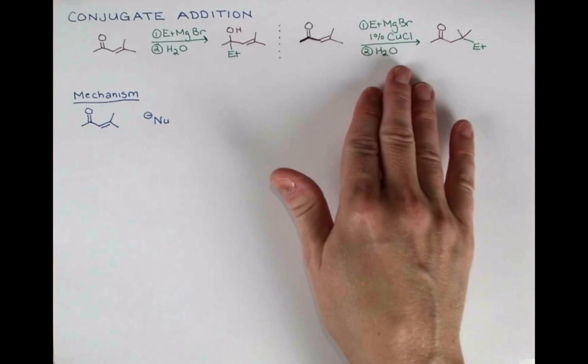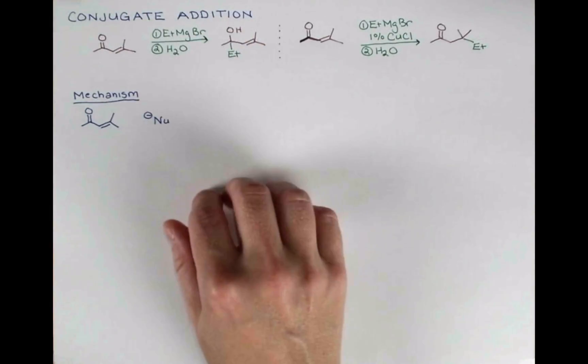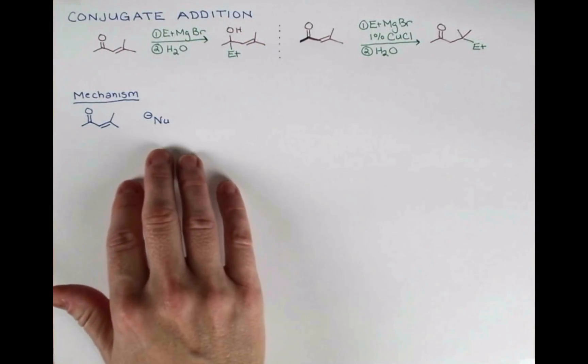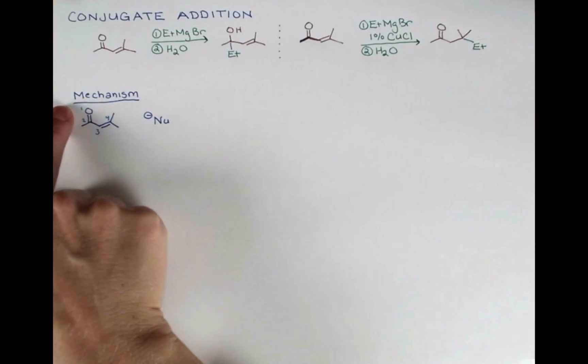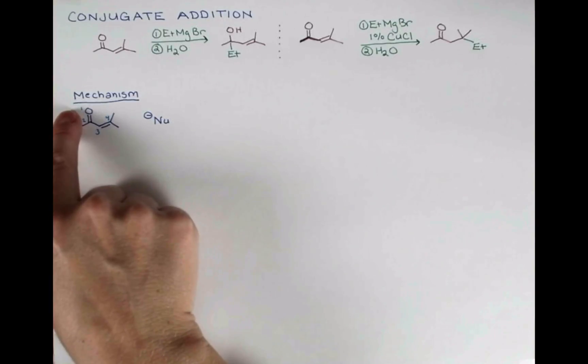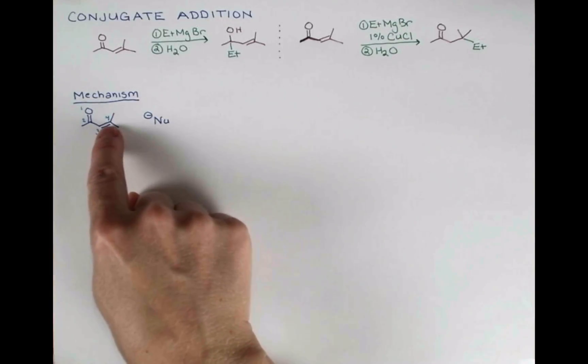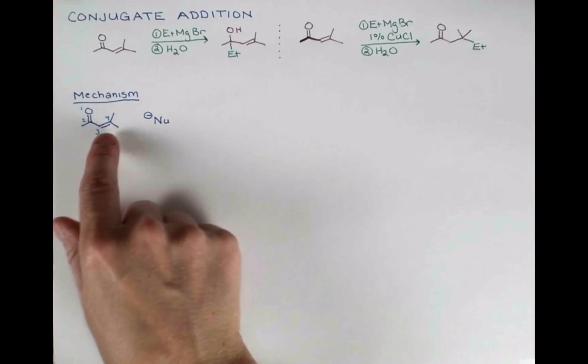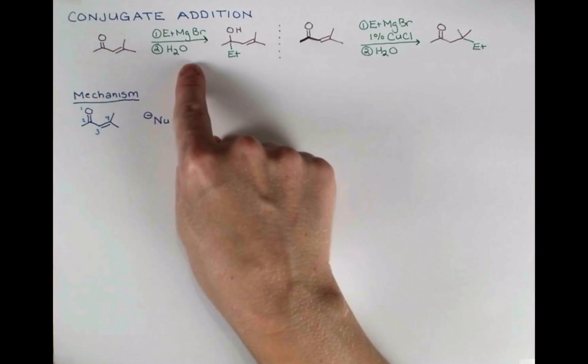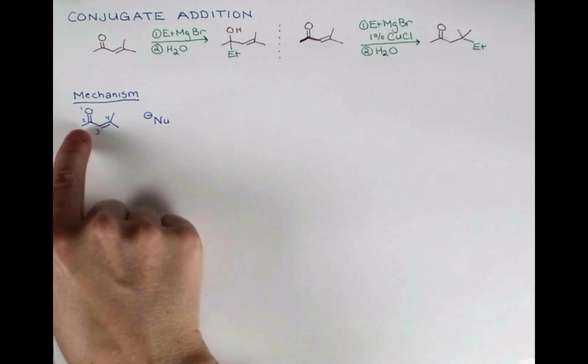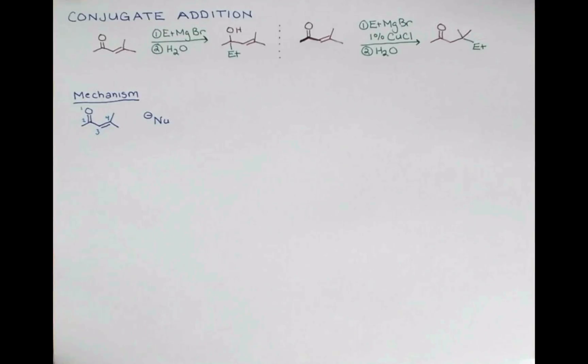Let's look at the mechanism for this reaction, which is called a conjugate addition. It can also be called a 1-4 addition or a Michael addition in honor of its discoverer. The name 1-4 addition derives from the fact that if we number the conjugated system starting with oxygen 1-2-3-4, the nucleophile adds at the 4 position but uses the entire conjugated system. This reaction up here can also be called a 1-2 addition because it only has to do with electrons moving between atoms 1 and 2 of the conjugated system.